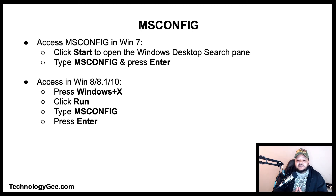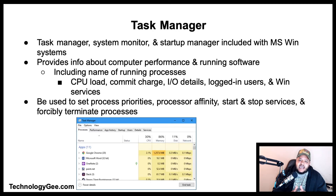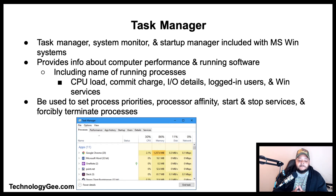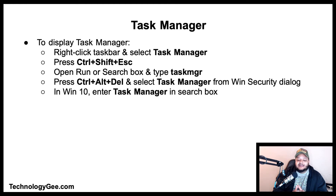The Task Manager is a system monitor and startup manager included with Microsoft Windows. It provides information about computer performance and running software, including running processes, CPU load, commit charge, I/O details, logged-in users, and Windows services. It can also set process priorities, processor affinity, start and stop services, and forcibly terminate processes. To open it: right-click the taskbar and select Task Manager; press Ctrl+Shift+Esc; type taskmgr in Run; or press Ctrl+Alt+Delete and select Task Manager.